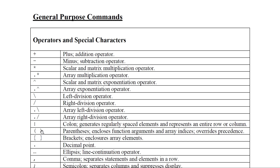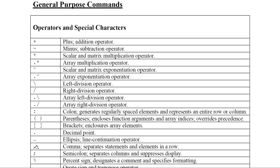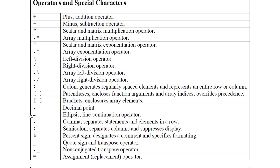Parentheses are used to pick or show an element in a matrix — for example, a(3,2) will display the element at the third row, second column. Square brackets are used to assign values: a = [1 2 3 4] stores those elements in matrix a. The decimal point dot is used as the line continuation operator — if a line breaks, put three dots so the line continues to the next.